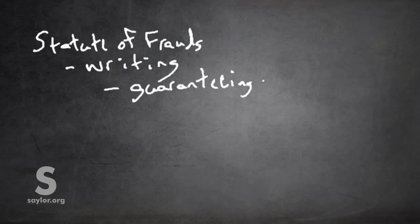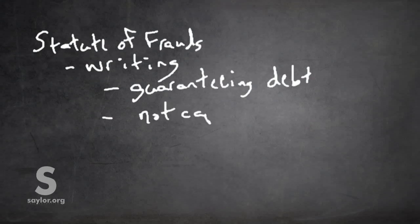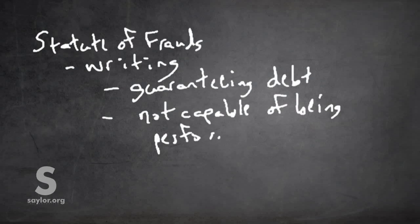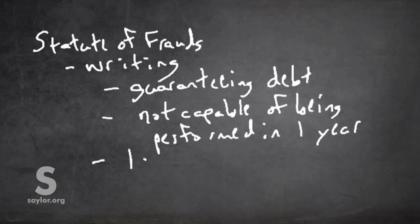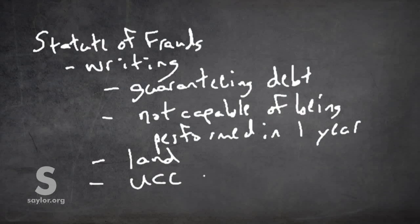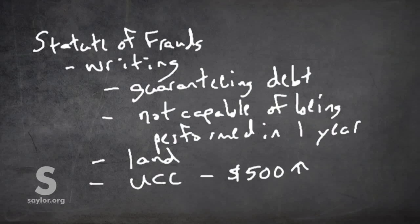Guaranteeing another's debt. Contract for guaranteeing another's debt has to be in writing. Contract that cannot be performed in one year. So a contract that is not capable of being performed in one year or less. The most notable one probably is a contract for transferring an interest in land. And the UCC gives us contracts for sales of goods that are worth $500 or more. $500 or more. So those are typically some of the contracts that must be in the statute of frauds. And again, there should be some element of review for you there.